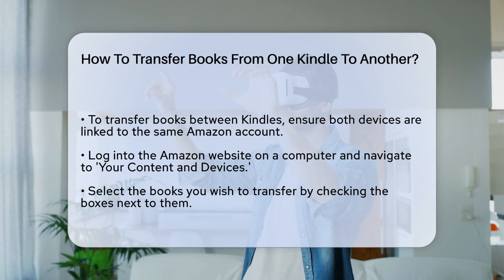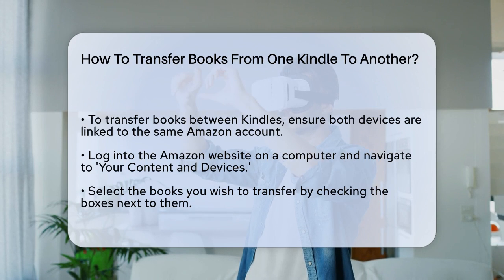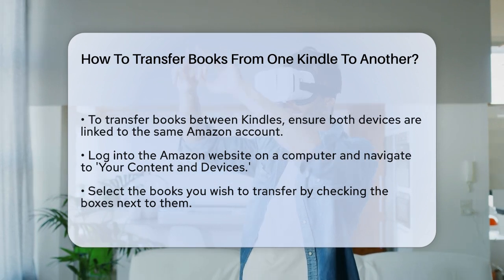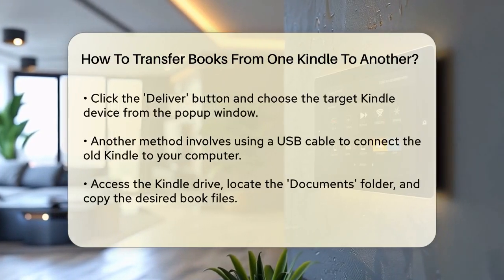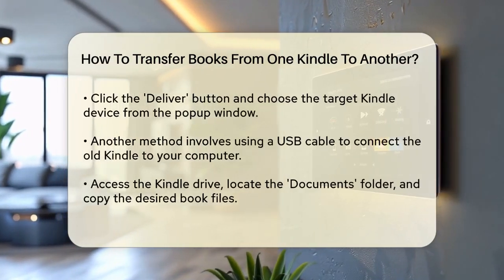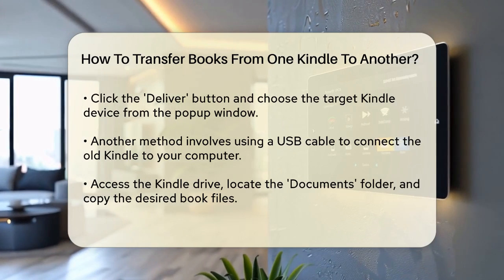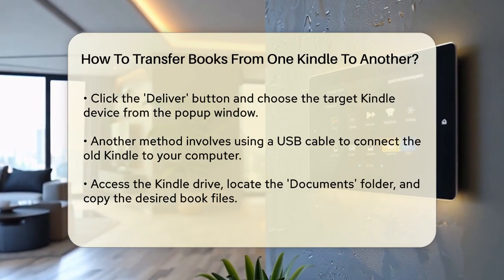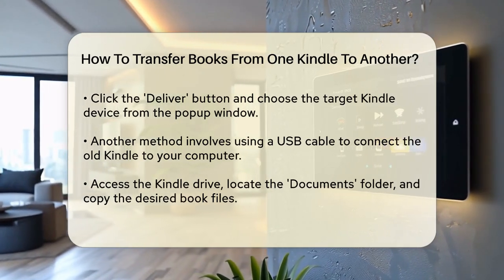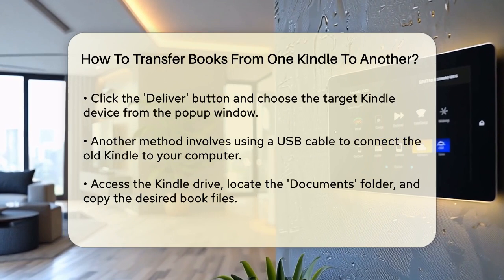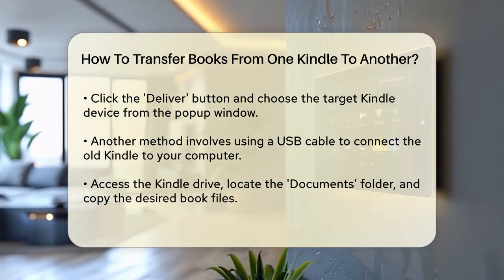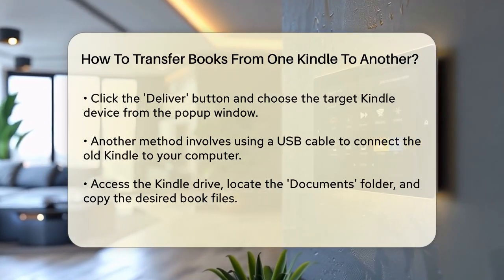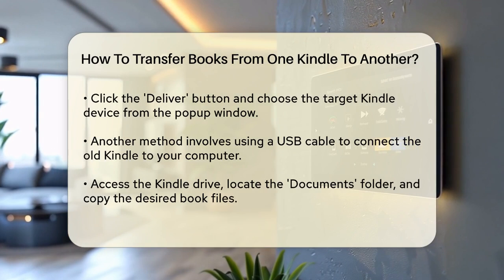Here you'll see a list of all your books. Select the books you want to transfer by checking the boxes next to them. Click the Deliver button at the top and a pop-up window will appear. Select the Devices Selected tab, choose the Kindle device you want to transfer the books to, and click Deliver again. This will send your selected books to the new device.